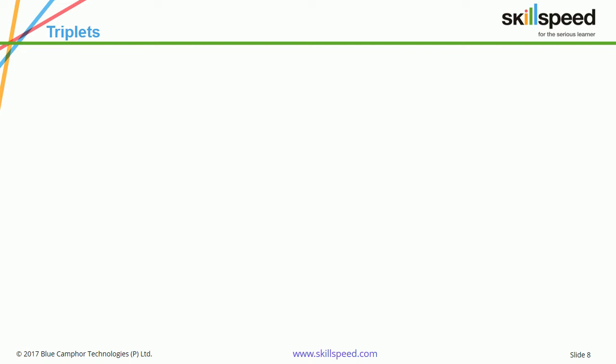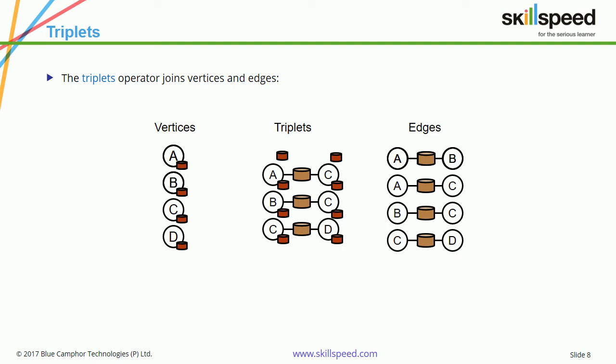Now let's understand what exactly a triplet is. A triplet is a special operator that can join vertices and edges. Vertices are nodes with properties, and edges are relationships between the nodes. If you take two vertices and the edge connecting them, you get a triplet. Let's explore this further.